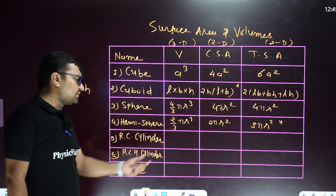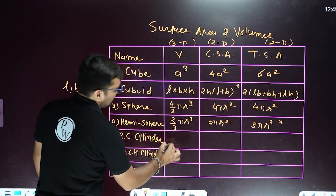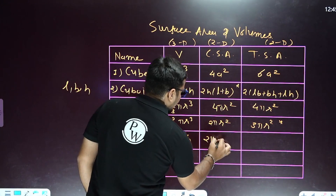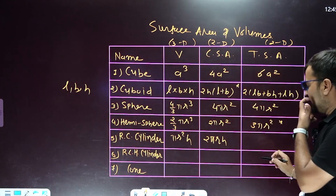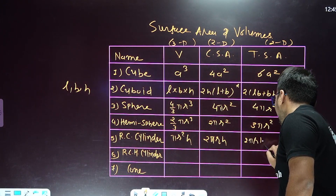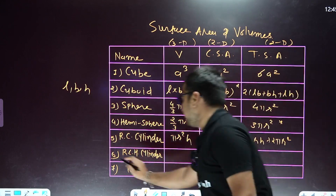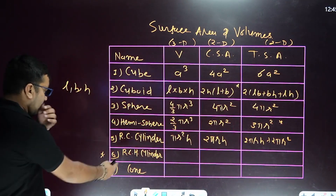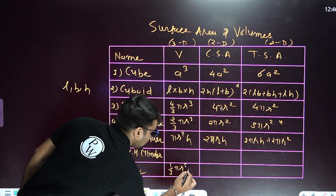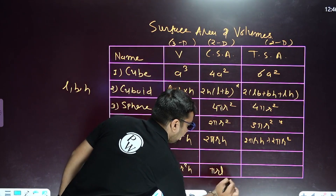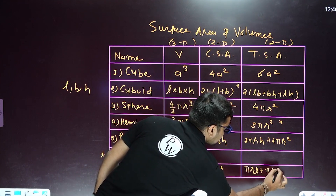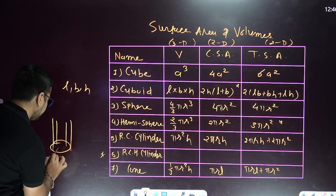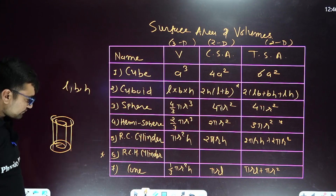For a right circular cylinder, volume is pi r squared h. Curved surface area is 2 pi r h, and total surface area is 2 pi r h plus 2 pi r squared. For a cone, volume is one third pi r squared h, curved surface area is pi r l, and total surface area is pi r squared plus pi r l.